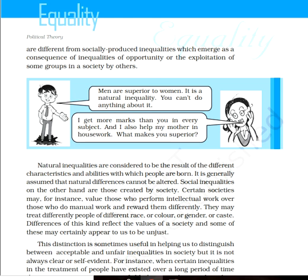It would seem unjust to most people today if the disabled are denied necessary help to overcome the effects of their disability or a fair reward for their work on the grounds that they are naturally less capable. If we do not give disabled persons proper treatment so that they can overcome their disability, then they cannot be given equal treatment or equal opportunities to overcome their natural inequality. That is all for today. Thank you and have a nice day.